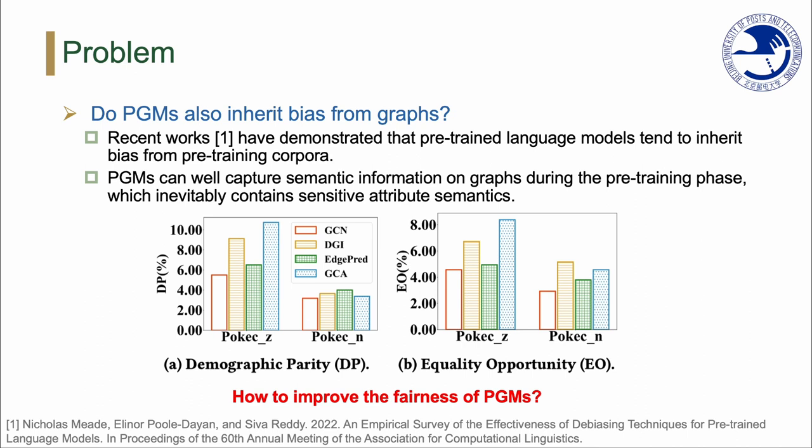To answer this question, we evaluate the node classification fairness of three different PGMs on datasets POCEC, and the results are depicted in the following figure. We observe that PGMs are more unfair than vanilla GCN, because PGMs can better capture semantic information on graphs during the pre-training phase, which inevitably contains sensitive attribute semantics.